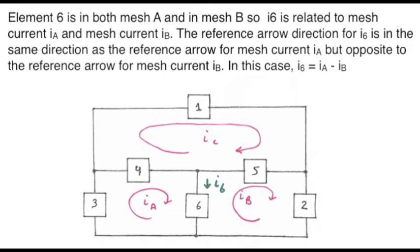Suppose an element is shared between two meshes, as is the case for element 6. Element 6 is in both mesh A and mesh B, so I6 is related to both mesh currents IA and IB. The reference arrow for I6 is in the same direction as mesh current IA, but opposite to mesh IB. So, I sub 6 is equal to I sub A minus I sub B.